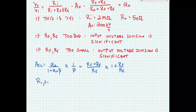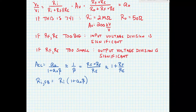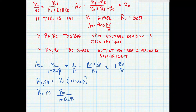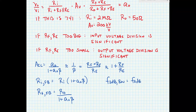R-in after feedback, because it's a series connection, is equal to R-in times 1 plus the loop gain — so 2 megaohms times 1 plus the loop gain. R-out after feedback is equal to R-out divided by 1 plus A0 times beta; the shunt connection at the output reduces the output impedance by a factor of 1 plus A0 times beta. And our 3 dB bandwidth after feedback equals the 3 dB bandwidth before feedback times 1 plus the loop gain.